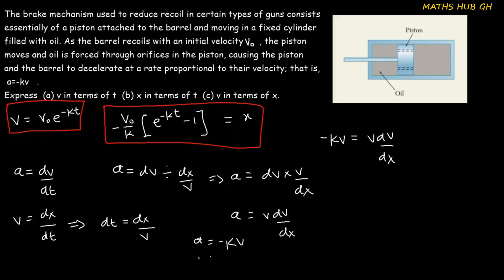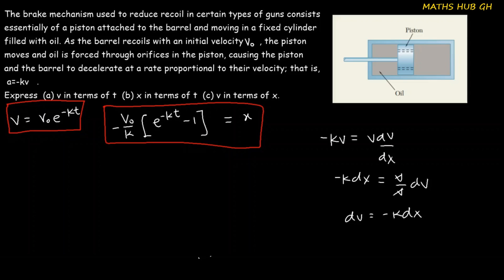Substituting the acceleration expression a equals minus kv, we get minus kv equals v dv over dx. Grouping terms: minus k dx equals v over v dv, and since v over v cancels, we have dv equals minus k dx.